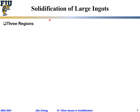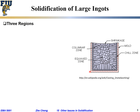Another issue I want to quickly mention is about solidification for large ingots, such as when people cast silicon ingots for polycrystalline silicon production or for large metal ingots. Typically they would form so-called three regions. This is a schematic for the crystallization microstructure of solidification when we pour hot liquid into a cold mold. We have the so-called chill zone, the columnar zone, and the equiaxed zone.